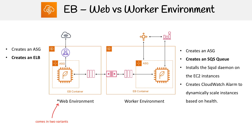When you first create an Elastic Beanstalk application, you have to choose an environment, and you're choosing between web versus worker. If you need to build a web application, you're going to choose a web environment. But if you need to run background jobs, you can choose a worker environment.